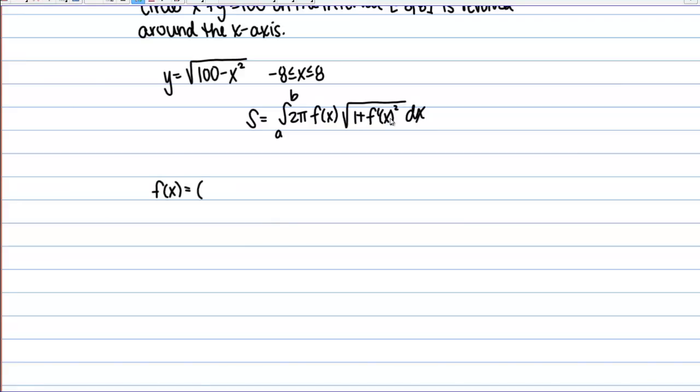So, we have f of X, which is 100 minus X squared to the 1 half power. So, the derivative then is going to be 1 half times 100 minus X squared to the negative 1 half power times the derivative of the inside, which would be negative 2 X in this case.